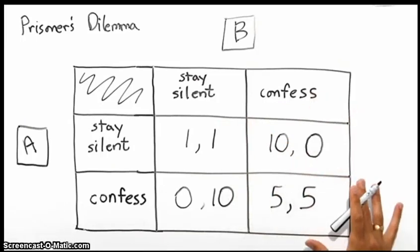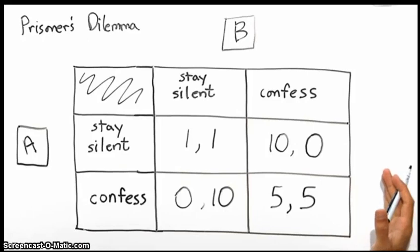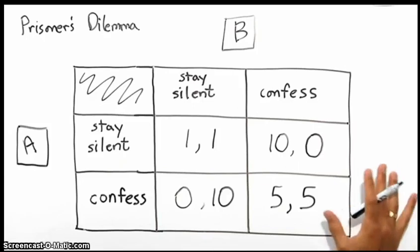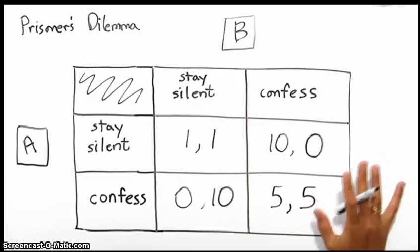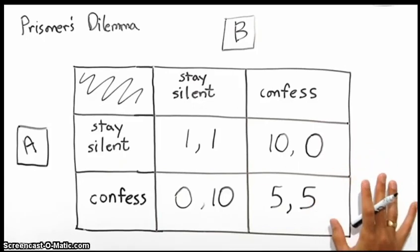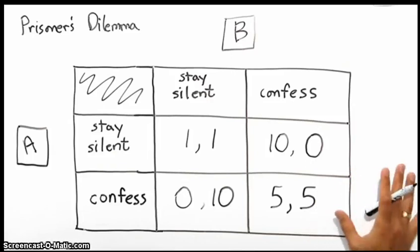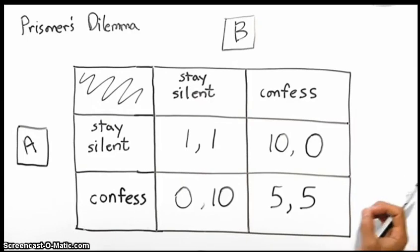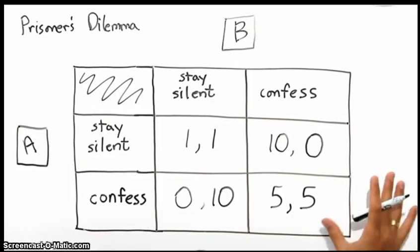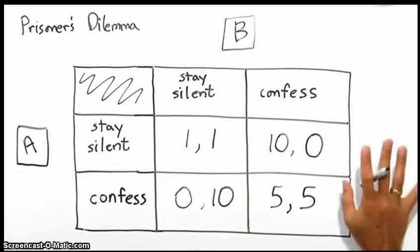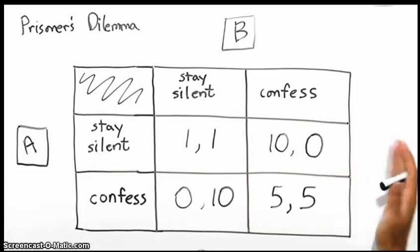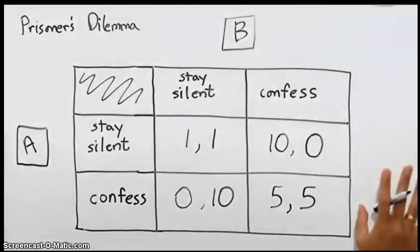So the whole idea of the prisoner's dilemma is it illustrates the difficulty for two partners to stay in cooperation with one another, to trust one another. And in international relations, this idea, this game, illustrates how difficult it is to maintain a partnership, to maintain cooperation, because incentive structures may present you with a very real possibility that if you commit to a course of action and someone else doesn't, you will incur the full penalty and someone else will benefit.